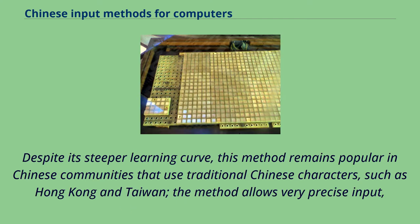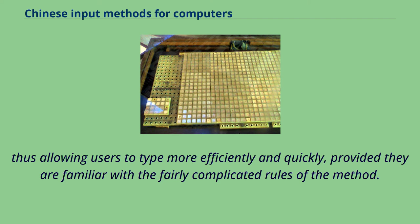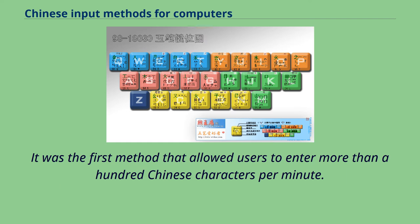Despite its steeper learning curve, this method remains popular in Chinese communities that use traditional Chinese characters, such as Hong Kong and Taiwan. The method allows very precise input, thus allowing users to type more efficiently and quickly, provided they are familiar with the fairly complicated rules of the method. It was the first method that allowed users to enter more than a hundred Chinese characters per minute.